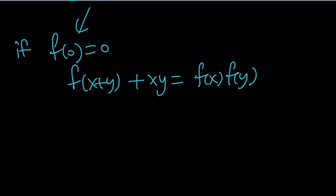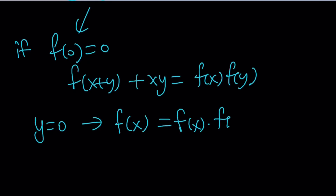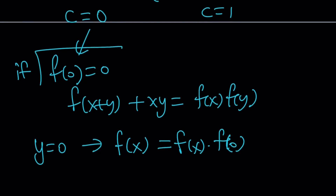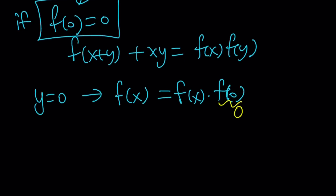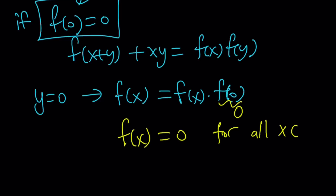Having known that, let's replace y with 0 in the original equation. That gives us f of x plus 0 equals f of x times f of 0. We're leaving x alone because we want to get an expression for f of x. But f of 0 is equal to 0, so f of x times 0 is always 0. Therefore we get f of x equals 0 for all x element of real numbers — a constant function where all outputs equal 0.